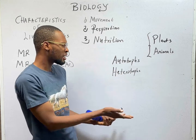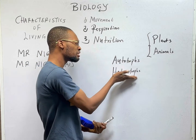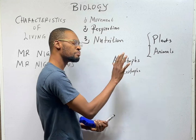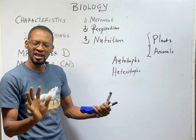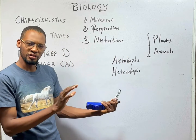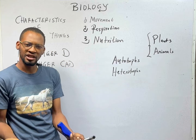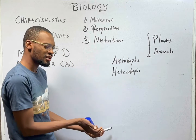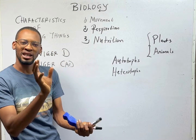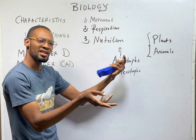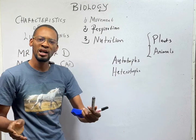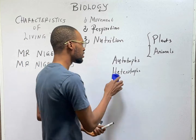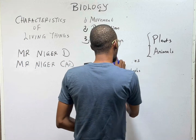Animals don't make what they eat. They depend on plants and other things to provide, like fishes, grasses, and other lower animals that they prey on.